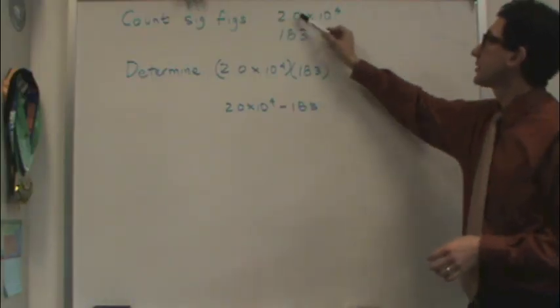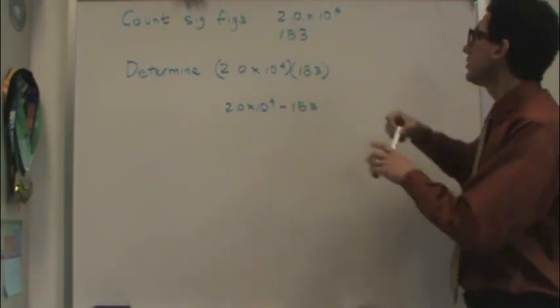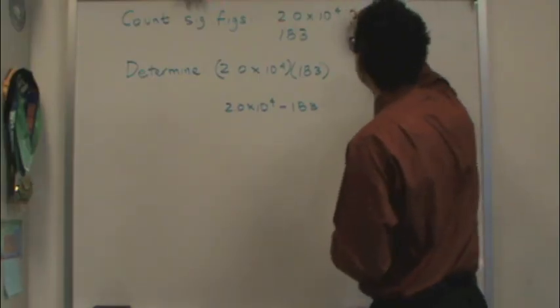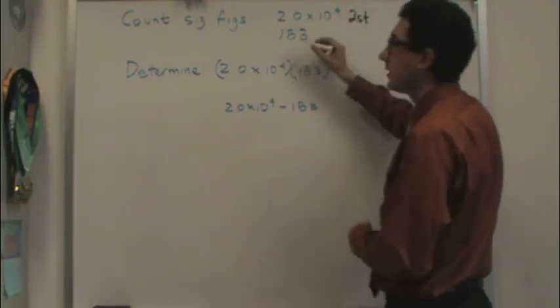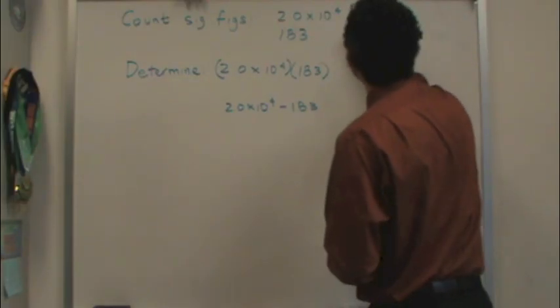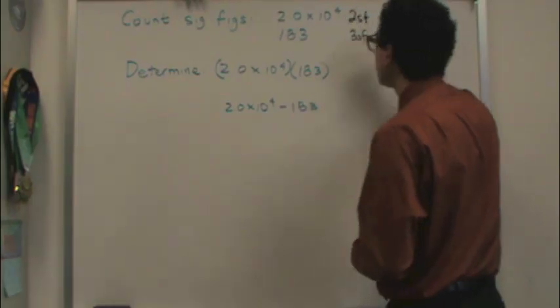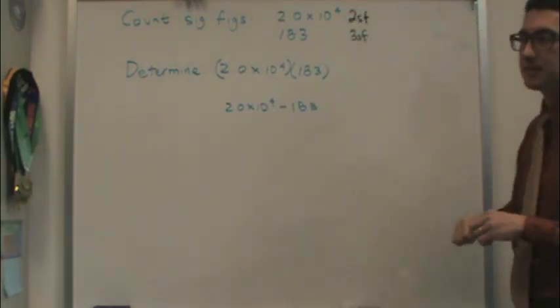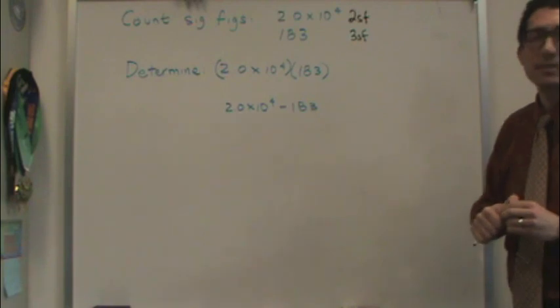First, you should be able to count how many sig figs you have in any problem. You see this? You just count the number of digits. So you should count two sig figs here, I'll put 2SF. And for 183, there's three sig figs, or three digits there that are significant. The number of digits listed are usually significant.